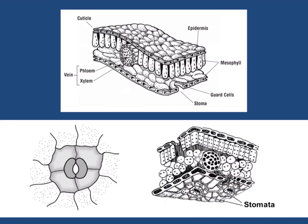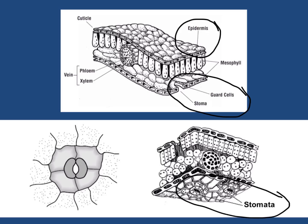Plants also have many tissues made of specialized cells that serve functions for the plant. The plant's epidermis is the tissue that is along the outside of the plant. Along the epidermis there are tiny pores. Each pore is called a stoma and is surrounded by a guard cell. Several pores are called stomata, and the purpose of these pores is to allow gas to enter and leave the plant.